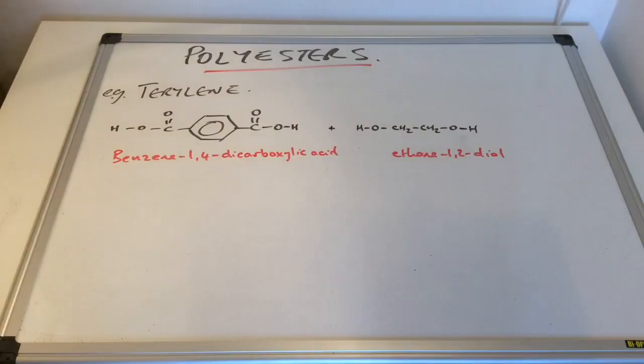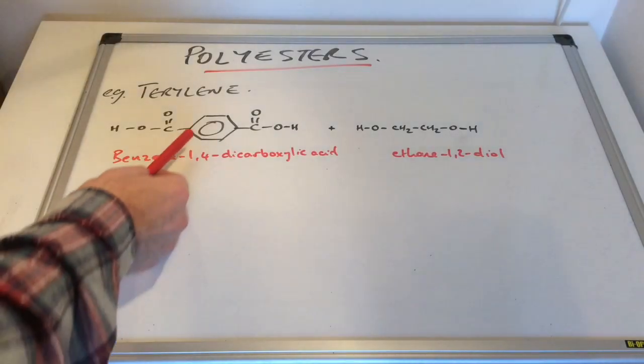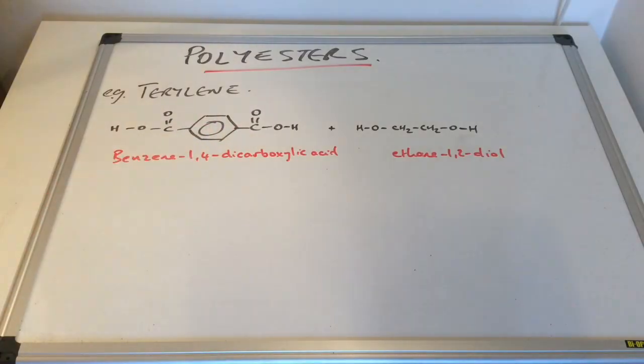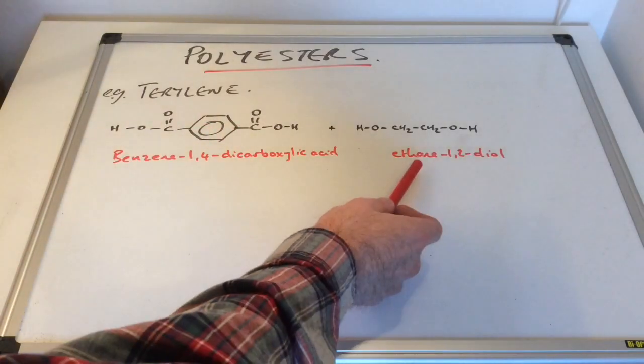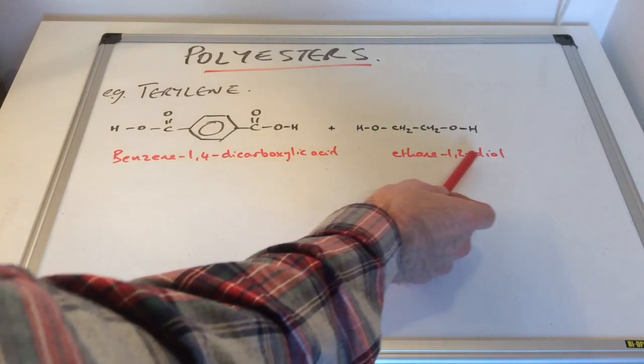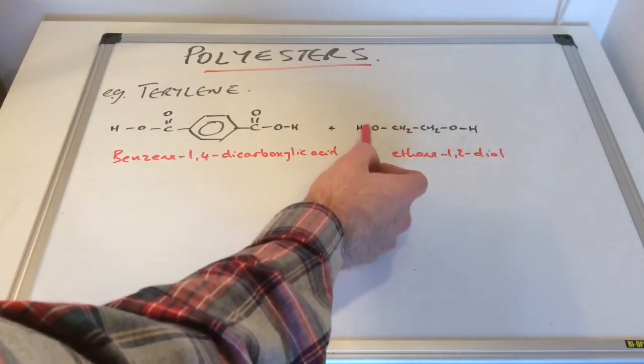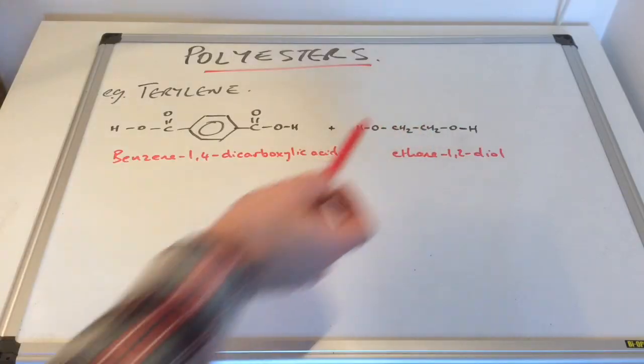And that's made from these two monomers, benzene 1,4-dicarboxylic acid. So you can see we've got a carboxylic acid group on the benzene ring at positions 1 and 4, hence the name. And we're going to react that with a diol called ethane 1,2-diol. So you can see the two carbons and the two hydroxyl groups on carbons 1 and 2.